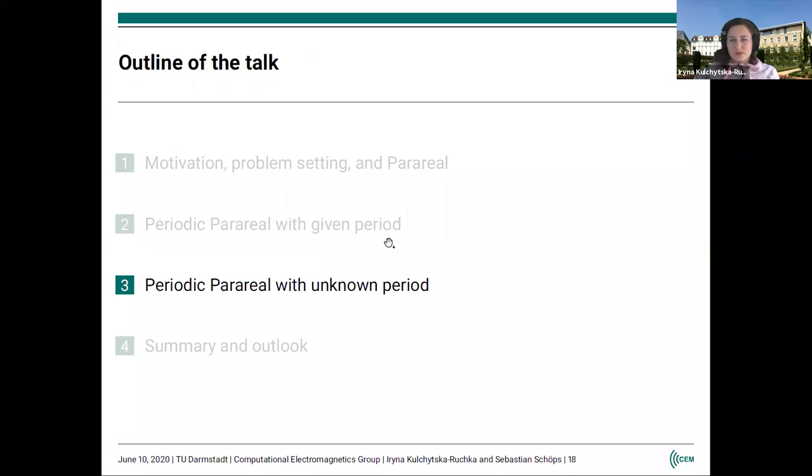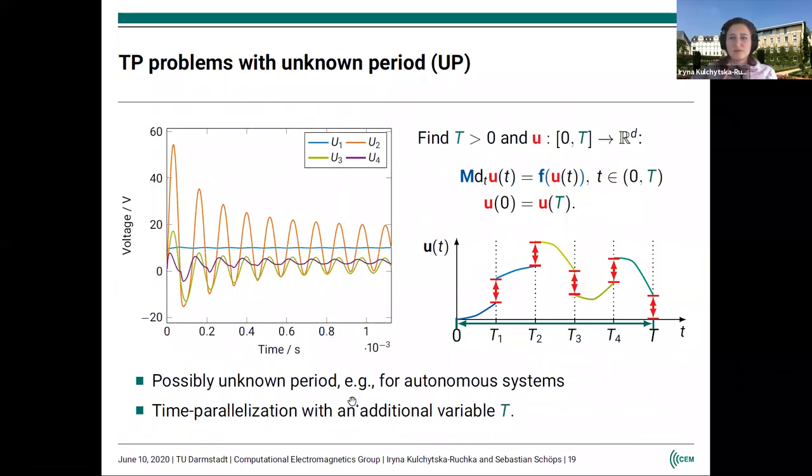Now, before I talked about the solution of time periodic problems when the period was given. Now it might happen that we don't know the period, for example when you have autonomous systems. We don't have any excitation which could tell us which period will be possessed by the solution. For example, here I show four node voltages of a circuit which I will use in a numerical example later. You see the classical transient behavior, and then the steady state is reached, but we cannot define the period from the beginning.